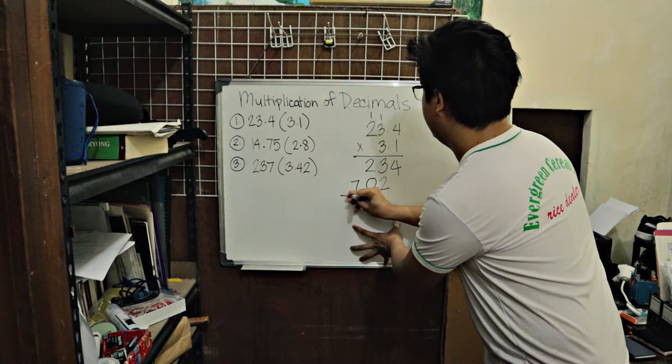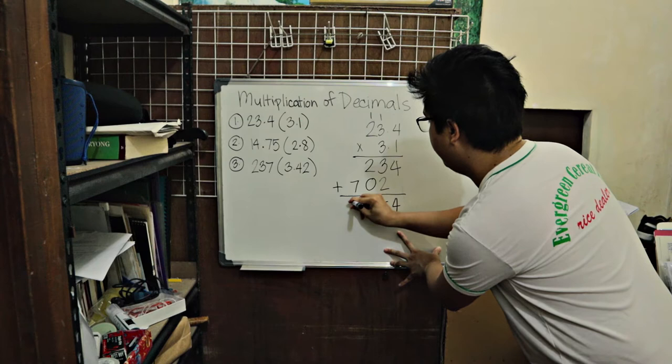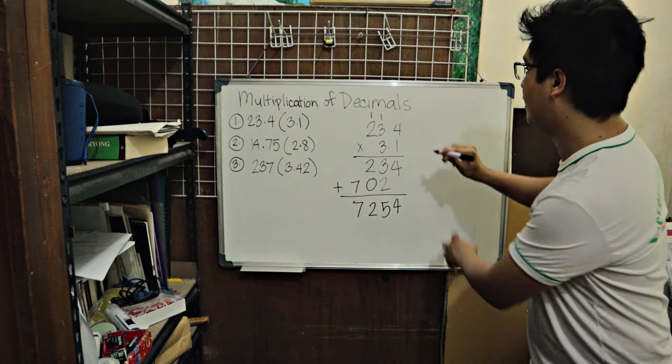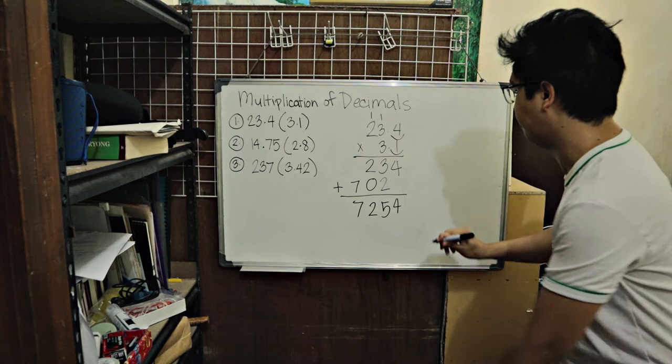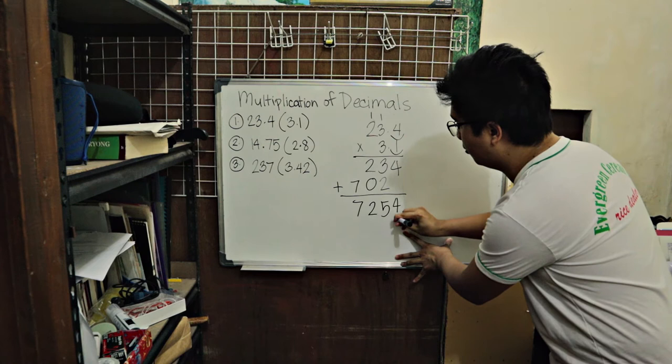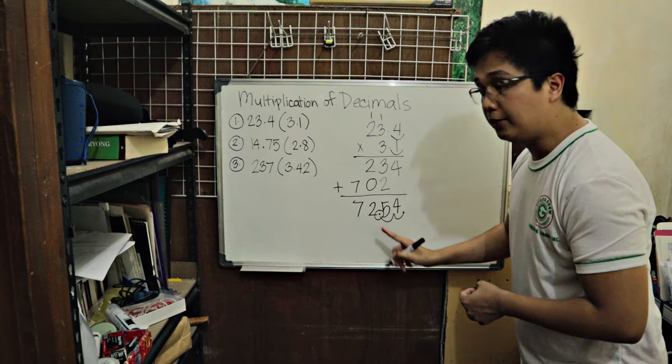And then we will just add this one. So 4. I'll bring down. 3 plus 2. That's 5. 2 plus 0. That's 2. And then we have 7. What we do is we count how many decimal places we have. So over here we have 1. And over here we have 1 decimal place. Meaning 1 plus 1. 2 decimal places. From the right. So the decimal point is over here. We will move 2 decimal places. So 1, 2. The decimal point is now between 2 and 5. So the answer is 72.54 or 72 and 54 hundredths.